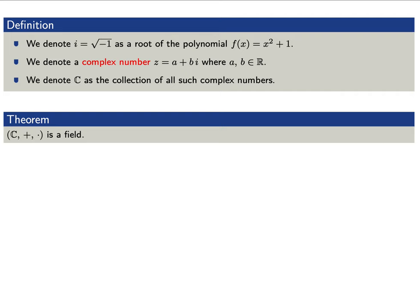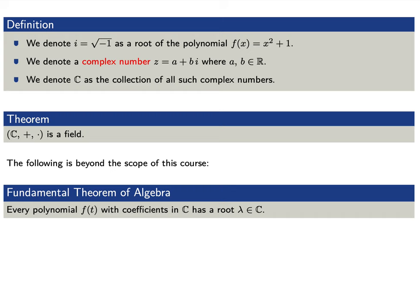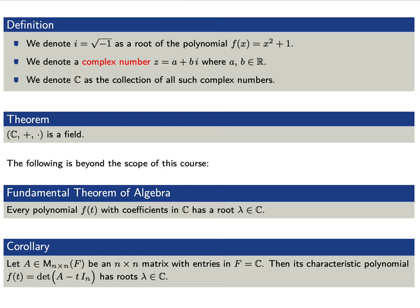The following statement is beyond the scope of this course, but it explains why we've introduced complex numbers. This is called the Fundamental Theorem of Algebra: every polynomial with coefficients in the complex numbers has a root lambda also in the complex numbers. For this course, if A is an n by n matrix with complex entries, then the characteristic polynomial f of t always has a root lambda that is a complex number. So the roots in general may not be real, but we can always find a complex root.